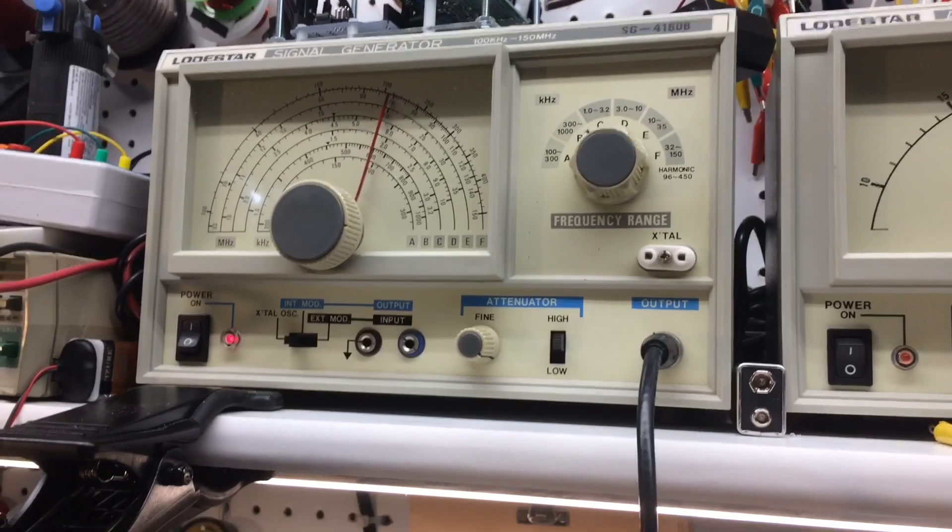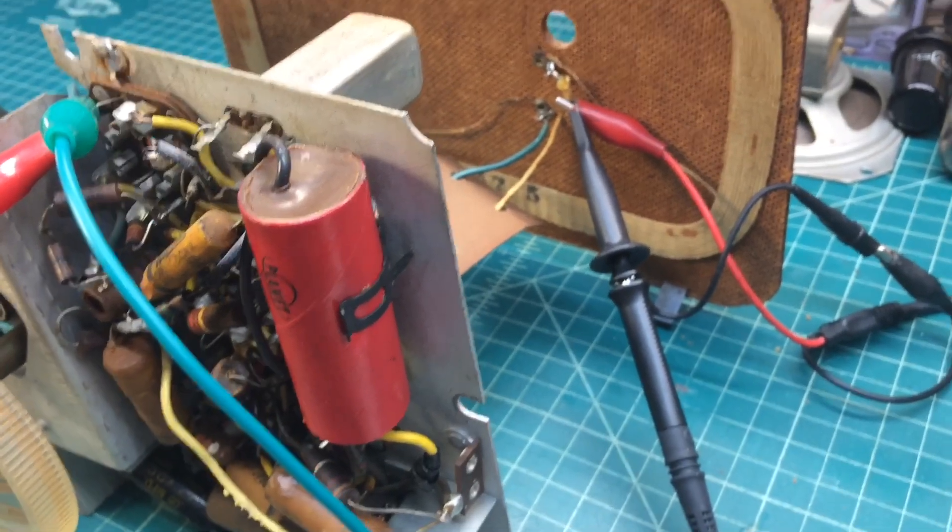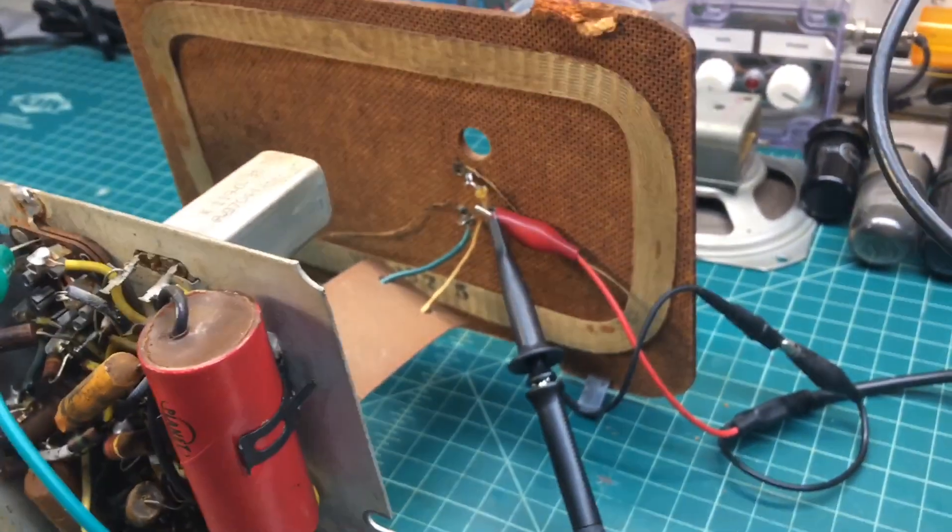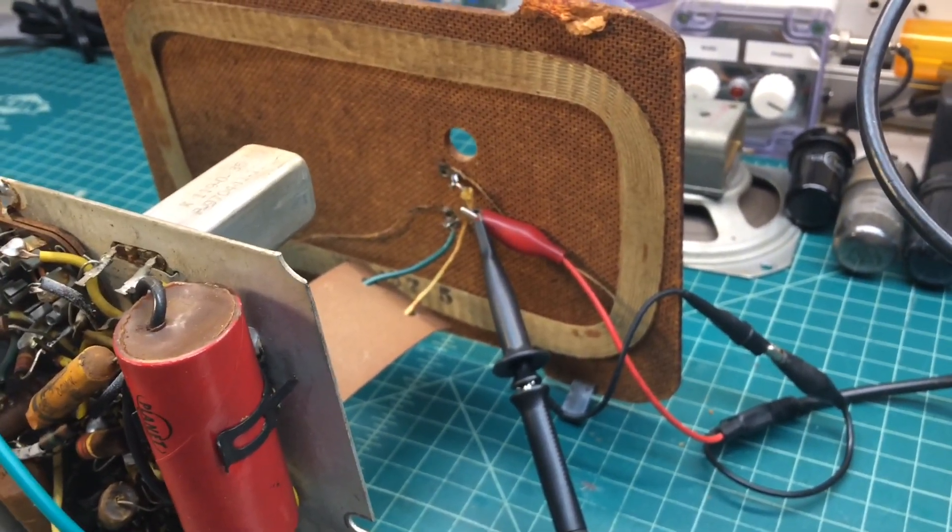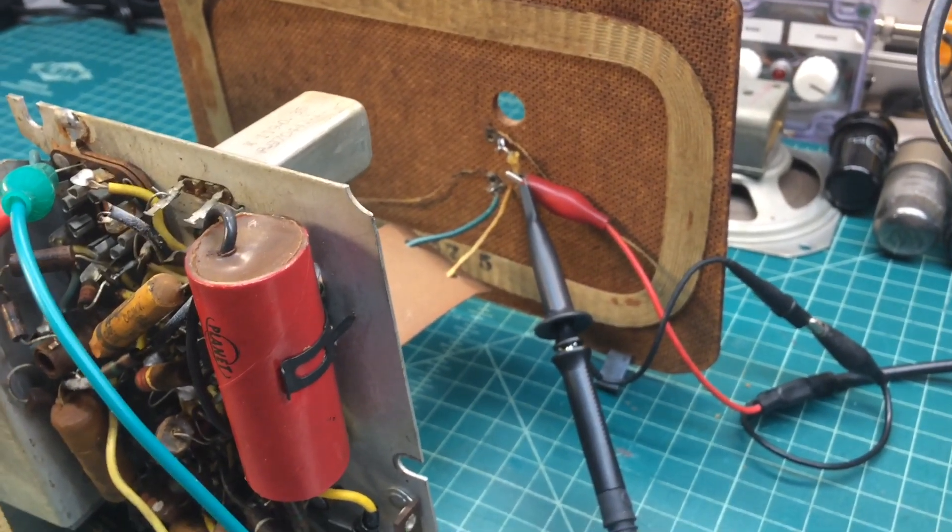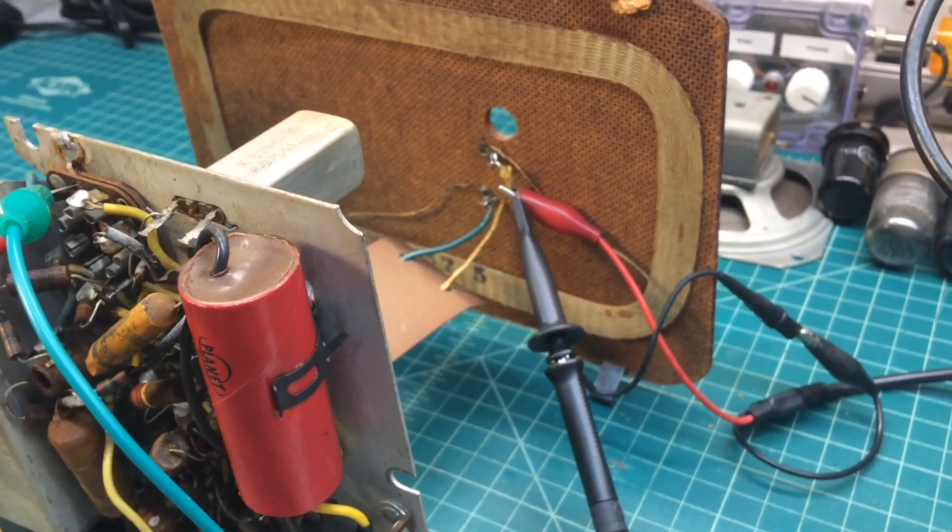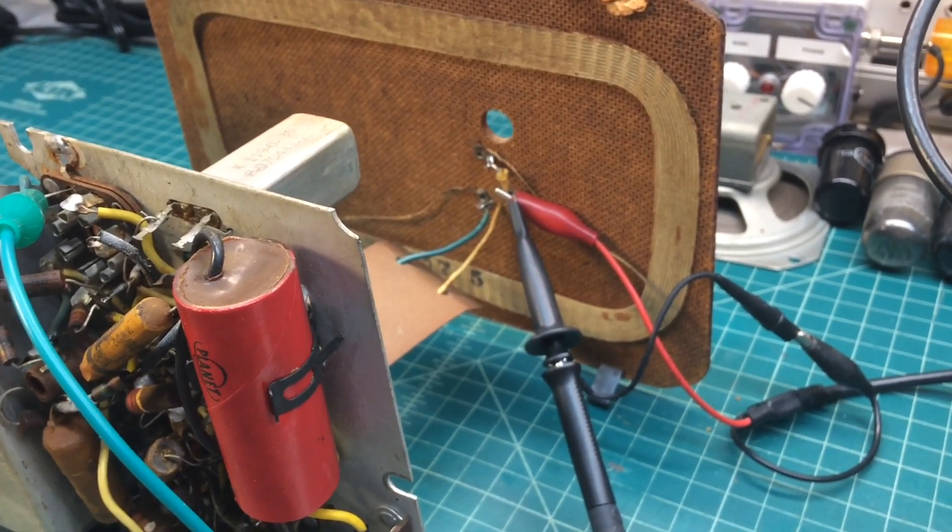So you can see I've got my signal generator still hooked up. It's tuned to 600 kilocycles and it's attached just like it was in the previous method. Here you can see I've got my oscilloscope hooked up reading the frequency. I'm just using the oscilloscope frequency counter in this case just to identify 600 kilocycles.